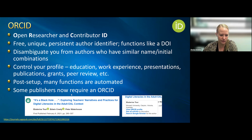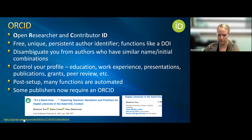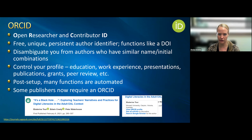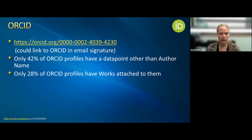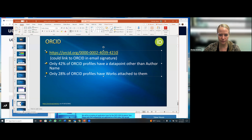Sometimes the ORCID is very visible on the publisher's website — for example, Sage has the ORCID right there, and clicking the ID links to the ORCID profile as well as Google Scholar articles. Other times it is just in the background, in the XML metadata of the webpage, but it will still be doing the linking for you. ORCID is a non-profit managed by member institutions, so it is free, has no ads, and operates much like DOI.